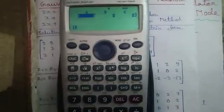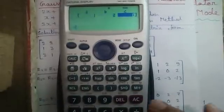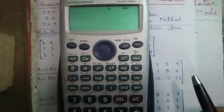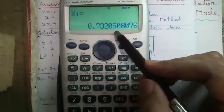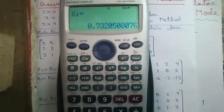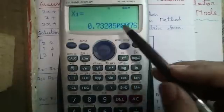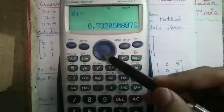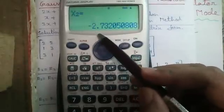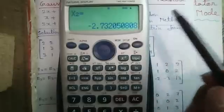It is 1 x square plus 2 x minus 2. So 1, 2 and minus 2. Press equals to. It will give you the root x1 equals to 0.73205. But Newton-Raphson method gives you only the positive root. But you can find out negative root also using calculator. Press joystick down. The negative root is x2 equals to minus 2.73205.